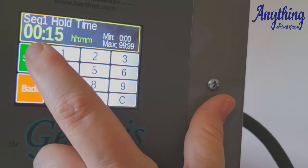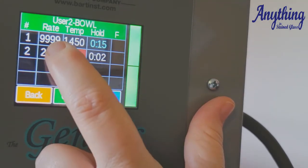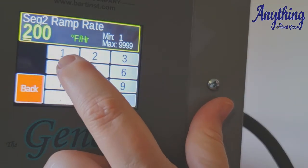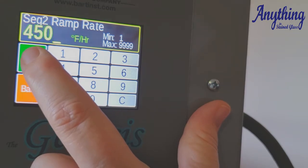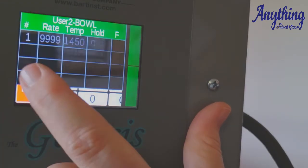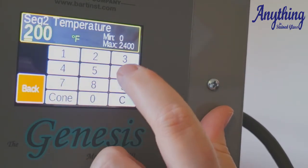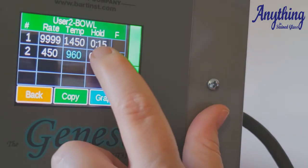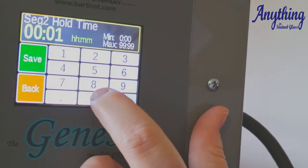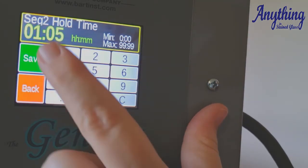Remember, hours to the left, minutes to the right. And now we're going to go into a slow controlled anneal. So let's say we're going to go at 450 degrees an hour for our second ramp rate. But we're going down by 450 degrees to 960. So let's say we're doing COE 96. So we'll do that.